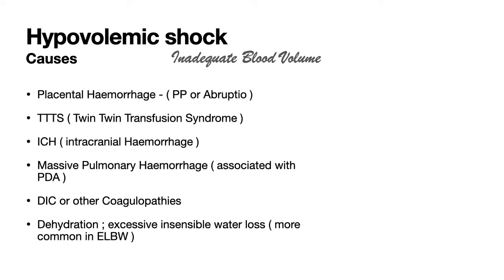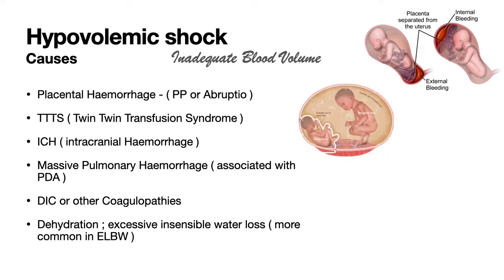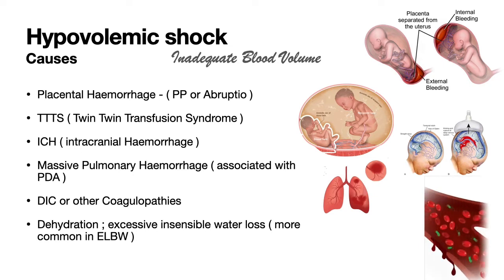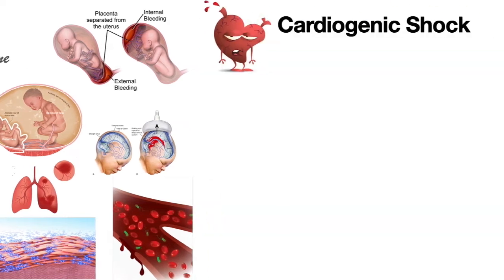The second type is hypovolemic shock. Common causes include placental hemorrhage, which includes placenta previa, abruptio placentae, and twin-twin transfusion syndrome, as well as intracranial hemorrhage, massive pulmonary bleed, disseminated intravascular coagulation, and dehydration. Especially in very low birth weight or extremely low birth weight neonates, insensible water loss occurs because of the increased surface area in proportion to weight.